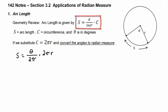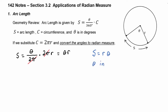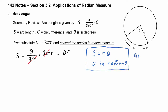Now you can see that the 2 pi in the denominator will cancel with the 2 pi in the numerator, and we're left with theta times R. It's very common to write this equation as S equals R times theta, where theta has to be in radians. This is the equation we're going to use whenever we have to find arc length.